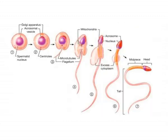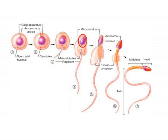Spermiogenesis involves: formation of an acrosomal cap above the sperm nucleus from the Golgi complex; rotation of the sperm so that the sperm head is directed towards the basal lamina and the tail is oriented towards the lumen of seminiferous tubules; flattening and condensation of the nucleus; removal of excess cytoplasm in the form of residual bodies or cytoplasmic droplets; and formation of a mitochondrial ring at the middle piece.